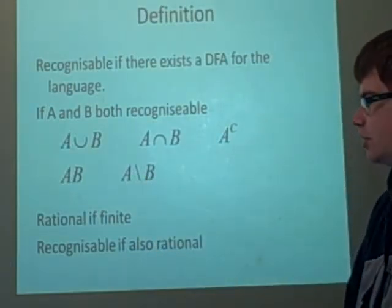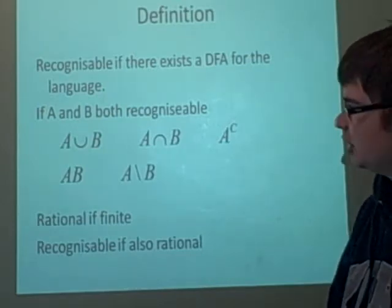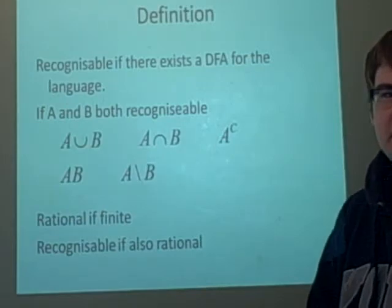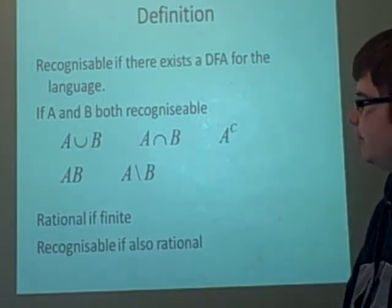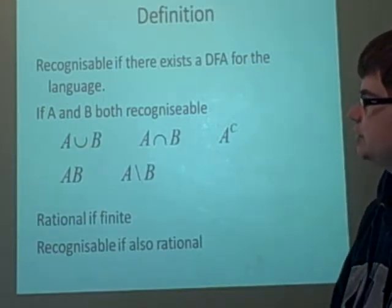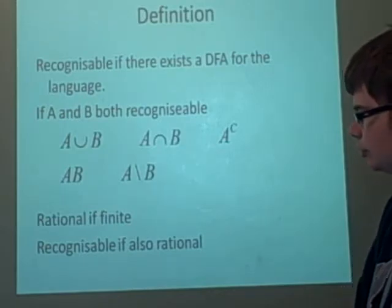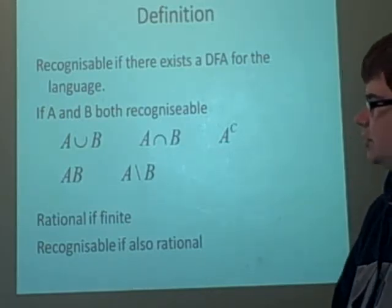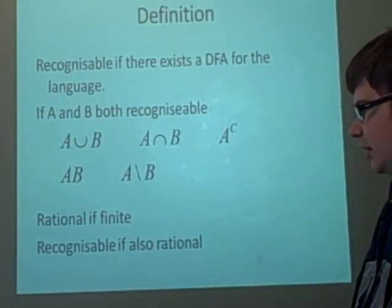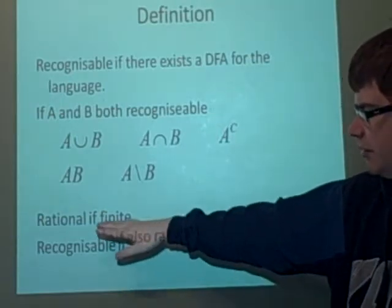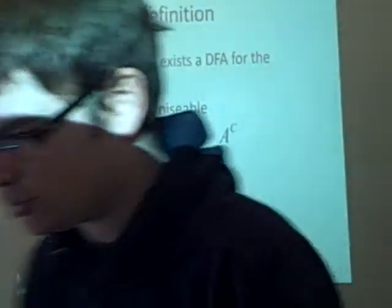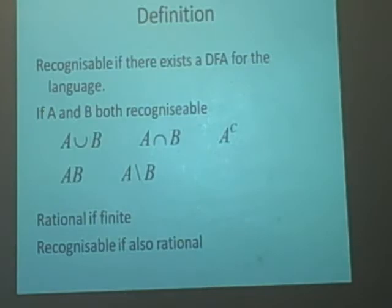Another thing to do with recognizable is if it's rational. A rational language is one that has finitely many states, or can be obtained by finitely many applications of sums and unions, that kind of thing. And if it's rational, then it's also recognizable. So it just has a finite number of states.